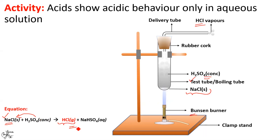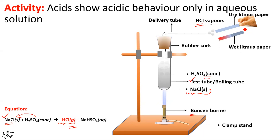We test the HCl gas first with dry blue litmus paper and then with wet or moist blue litmus paper. When we bring dry blue litmus paper near the gas, the color of the paper remains unchanged. However, in the case of wet or moist blue litmus paper, the color changes to red. This activity shows that in the absence of moisture or water, dry hydrogen chloride gas does not release hydrogen ions and thus does not show acidic character — it does not turn blue litmus paper red — whereas in the presence of water, H⁺ is released and acidic character is exhibited.